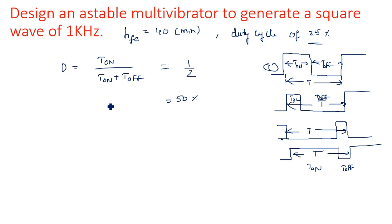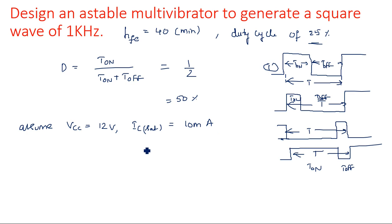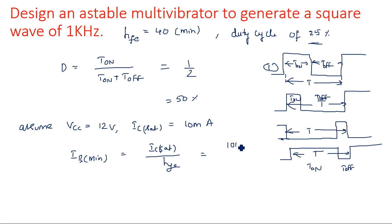Since the amplitude of the square wave to be generated is not given, let us assume VCC = 12 volts. Assume IC_sat (saturation collector current) = 10 milliamperes. With HFE = 40, the minimum base current is IB_min = IC_sat / HFE = 10mA / 40 = 0.25 milliamperes.